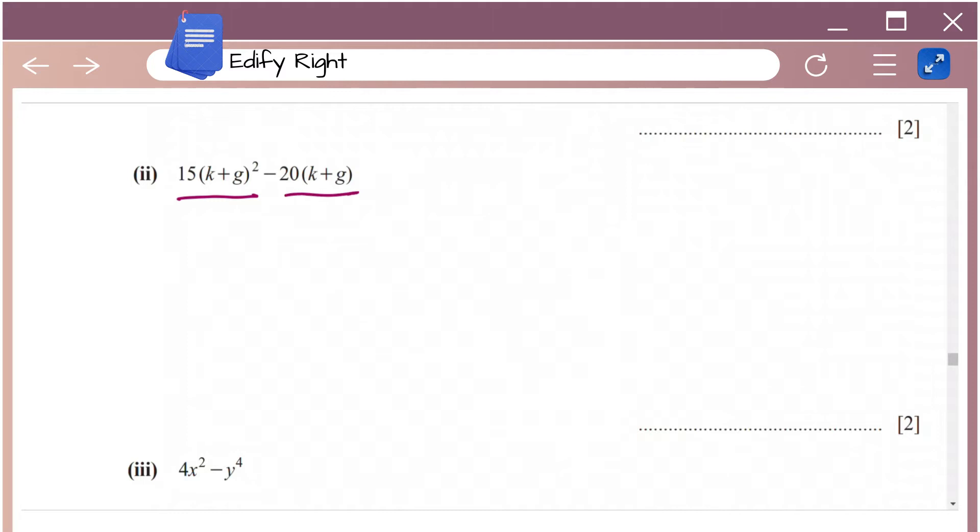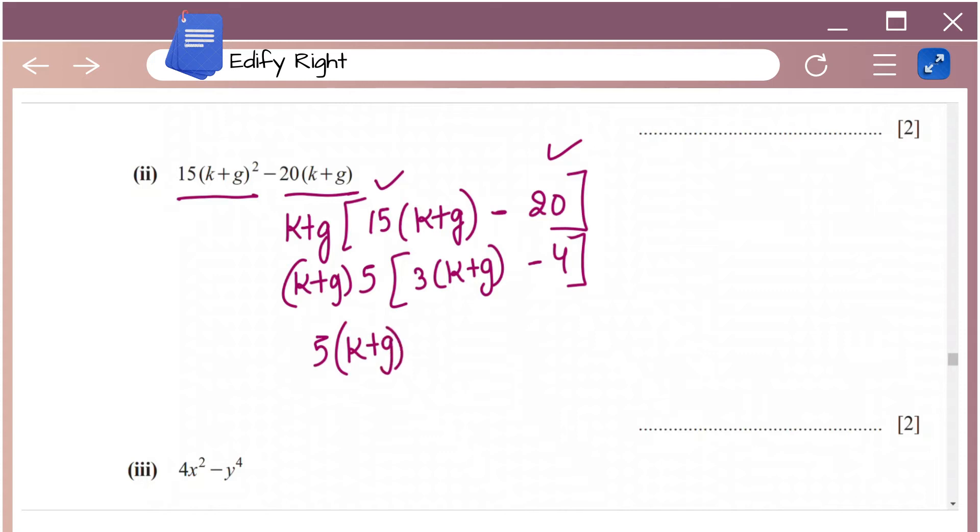So here right off the bat you can see that k plus g is common in both the terms. So let me just take k plus g common, so that would be 15 into k plus g minus 20. That would be k plus g into, I can take 5 common in these two terms, so I'll do that. That'd be 3 times k plus g minus 4. So that is 5 into k plus g. Just open the brackets here, you get 3k plus 3g minus 4.